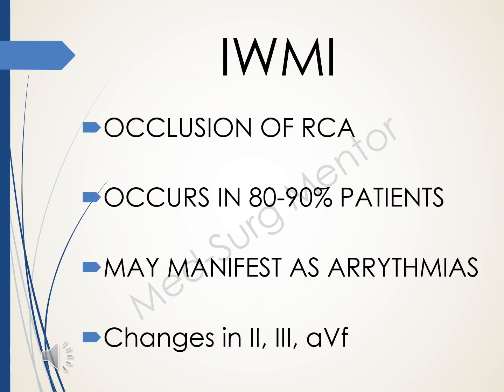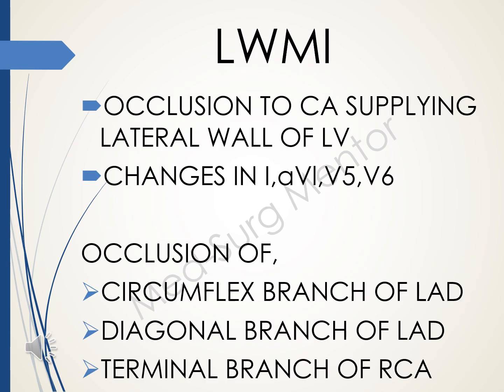Inferior wall MI occurs due to occlusion of the right coronary artery and can be seen in around 80 to 90 percent of patients. It may manifest as arrhythmias and ECG changes are evident in lead 2, lead 3, and AVF. In lateral wall MI, there is occlusion of the coronary artery supplying the lateral wall of the left ventricle, and ECG changes can be seen in leads 1, AVL, V5, and V6.